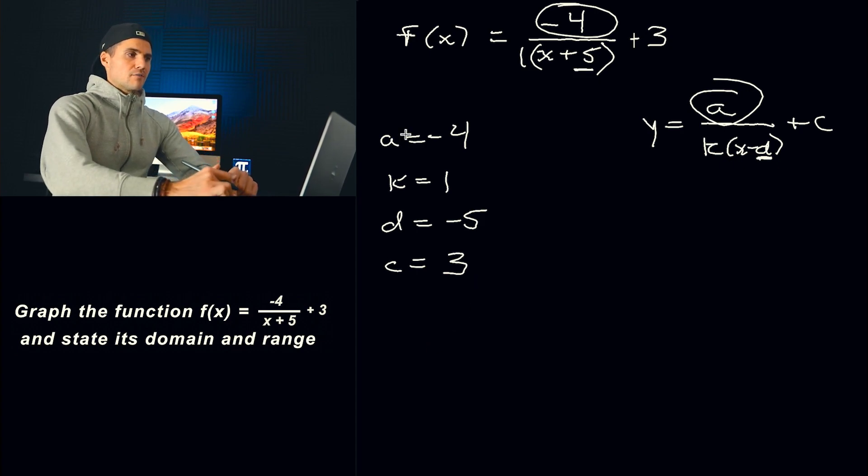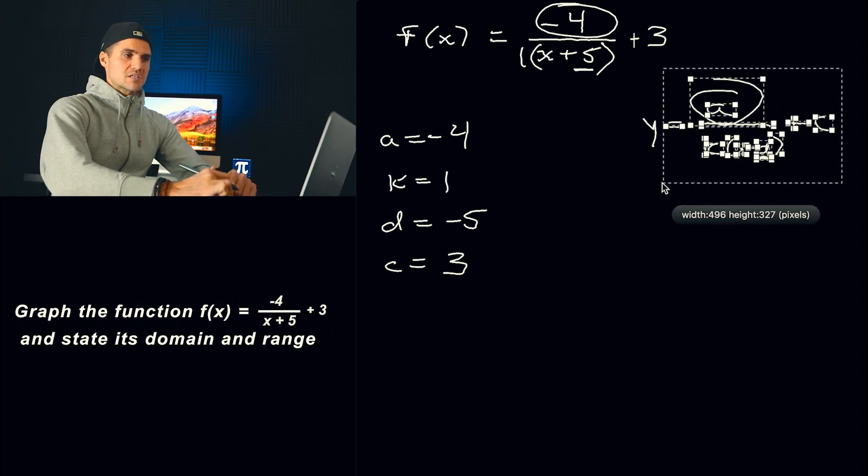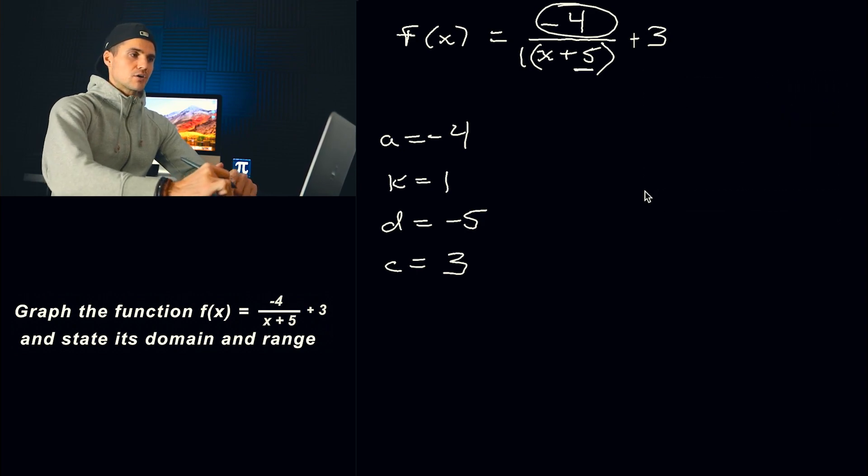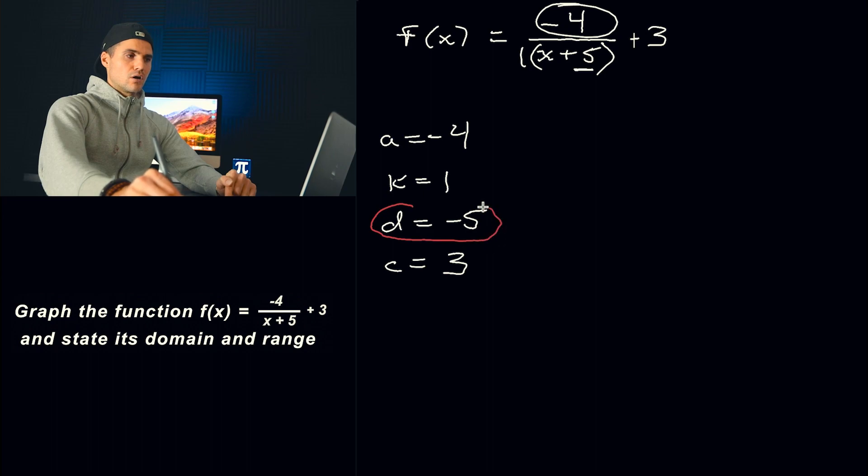Okay, so we have our transformation values. Now remember, with the reciprocal function in particular, remember that the d value always represents the what? The vertical asymptote. And then the c value represents the horizontal asymptote.